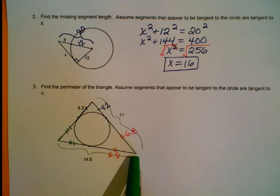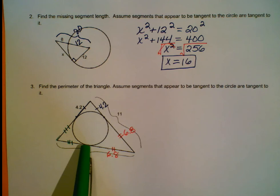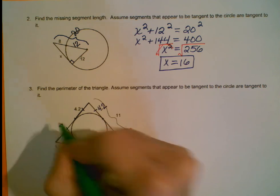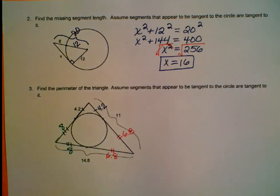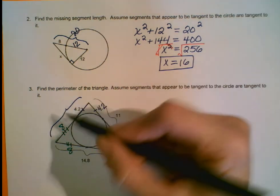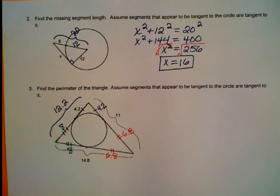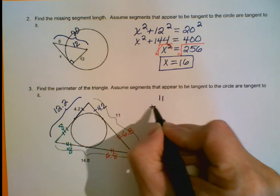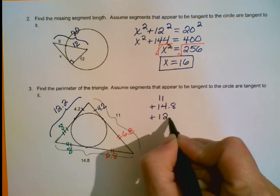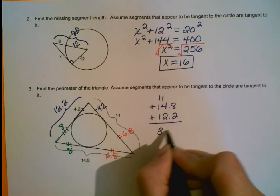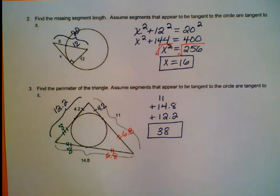Using the side of 14.8 units total: 14.8 minus 6.8 tells us this portion is 8 units long, which means its congruent tangent segment is also 8 units. So the third side of the triangle is 8 plus 4.2, which equals 12.2 units. Adding all three sides: 11 plus 14.8 plus 12.2 gives a perimeter of 38 units. That takes care of this set of notes on testing for tangency.